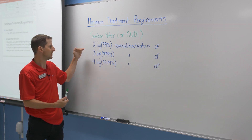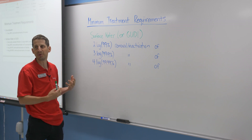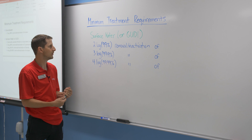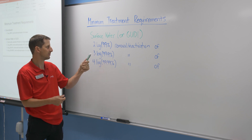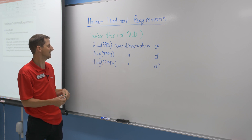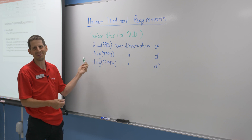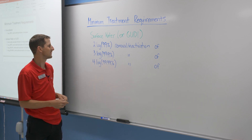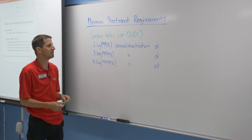You need to meet two log, three log, four log removal of certain bugs in your water that you're treating. Log just means the number of nines. If it's two logs, it's two nines; three logs, three nines; seven logs, seven nines. So it just gets more and more efficient removal of bugs.